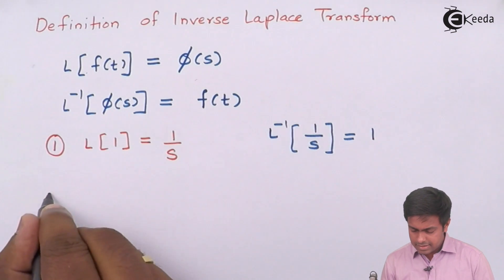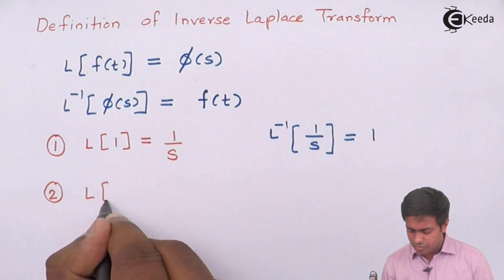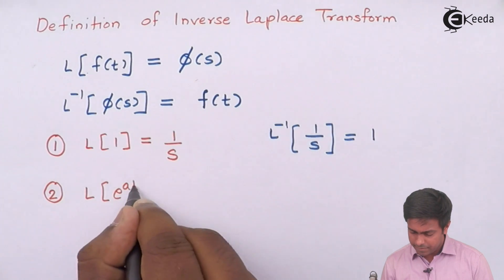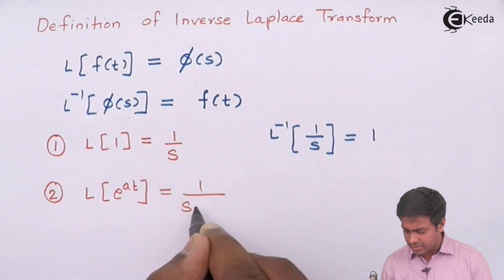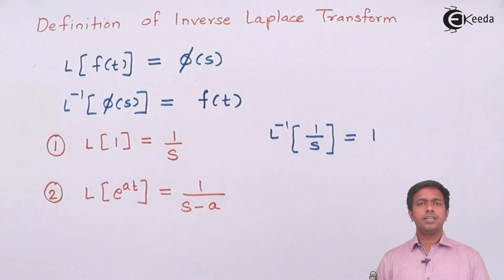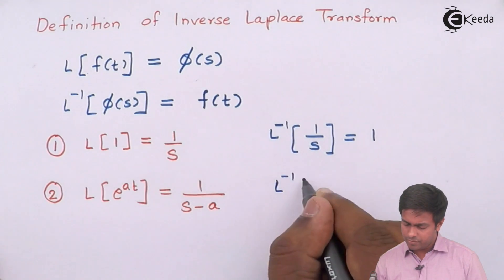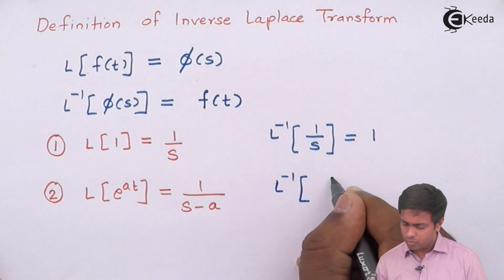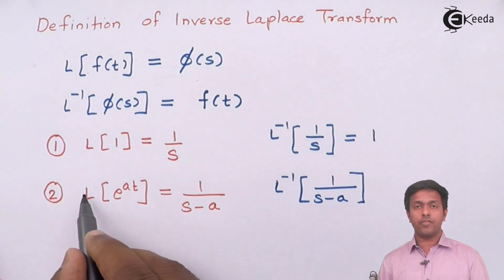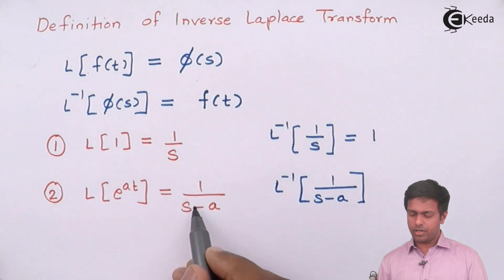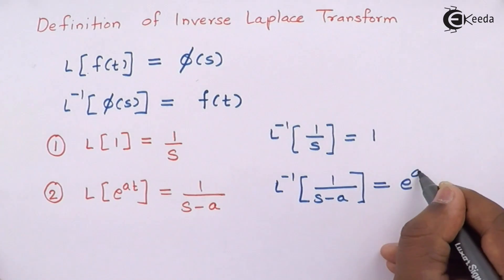Formula number two: we know that the Laplace transform of e^(at) is 1/(s−a). Similarly, we get L⁻¹{1/(s−a)} — shifting L inverse here — and the answer is e^(at).